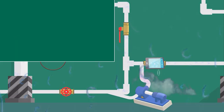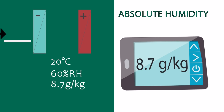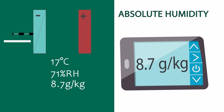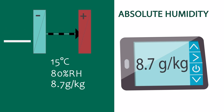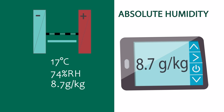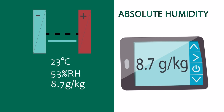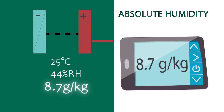Absolute humidity. This measurement tells us the amount of water vapor in the air. It's usually measured in grams of water vapor per kilogram of dry air. Absolute humidity helps us understand how wet or dry the air is, regardless of the temperature.